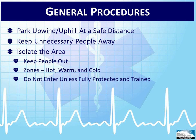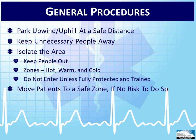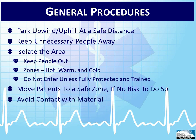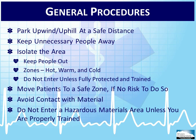The primary function of an EMS crew at a hazardous materials scene is to triage, treat, and transport patients as they are decontaminated and become available in the cold zone. Follow the directions of the incident commander, as crew integrity and accountability are of vital importance during hazardous materials incidents. It may also be necessary for the EMS crew to provide rehab services for the other personnel on scene. Regardless of the functions served by the EMS crew, always ensure contact with hazardous materials is avoided. Do not treat or transport patients or other emergency personnel on scene until they have been decontaminated.